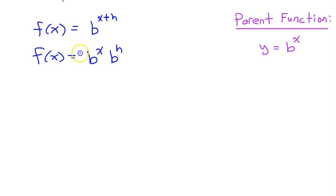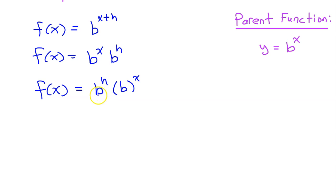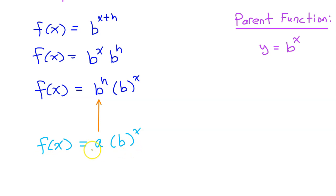And if we put that in the front, f of x equals b to the h times b to the x. Comparing this to the model exponential function a times b to the x power, we can see that the b to the h part is just the a value. And this is a vertical dilation by a factor of b to the h.